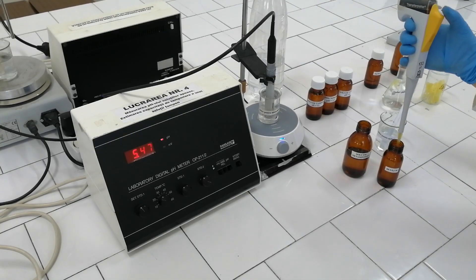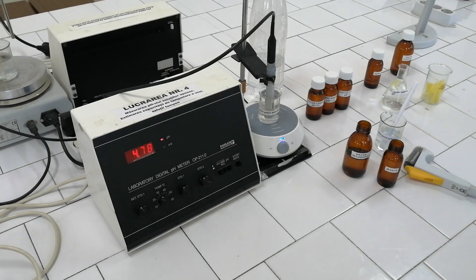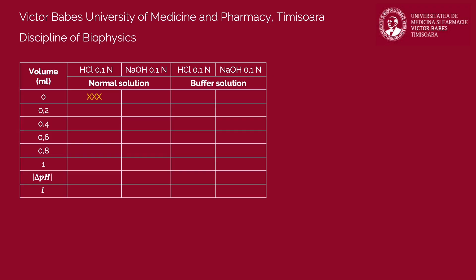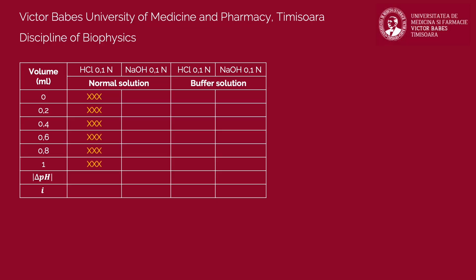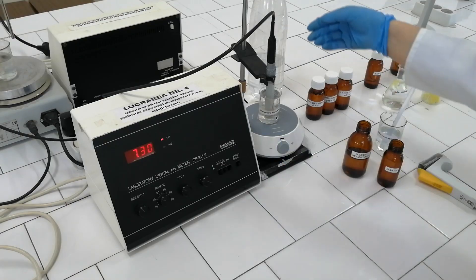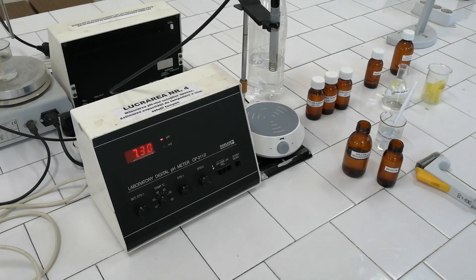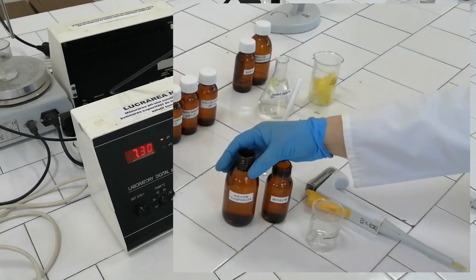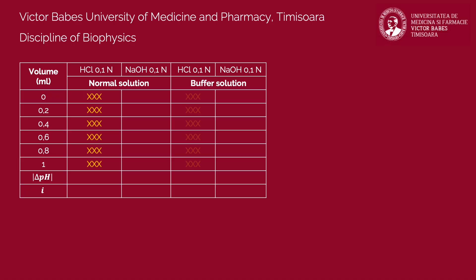Using a micropipette, add 0.2 ml of hydrochloric acid solution into the non-buffer solution. After waiting another minute, read the pH value and record it in the table. Repeat this operation four more times and write all the obtained values in the table. Set the pH meter in standby working mode, stop the magnetic stirrer, take out the measuring electrode, and discard the solution in the sink. Rinse all the instruments well with distilled water. Using the previous methodology, measure the pH of the buffer solution before and after adding small amounts of acid. Record all the obtained values in the table.